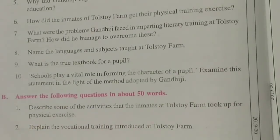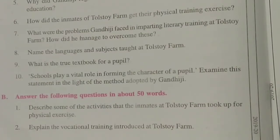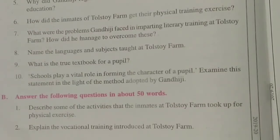At Tolstoy Farm there were no servants, so the inmates had to do every work from cooking down to scavenging by themselves. Some of them used to work in the kitchen, others worked in the garden. Children used to get involved in digging pits, felling timber, and lifting loads. These activities gave them sufficient physical exercise and they didn't need any games or other physical exercise.